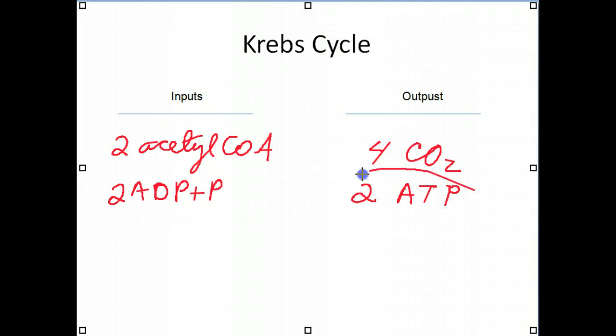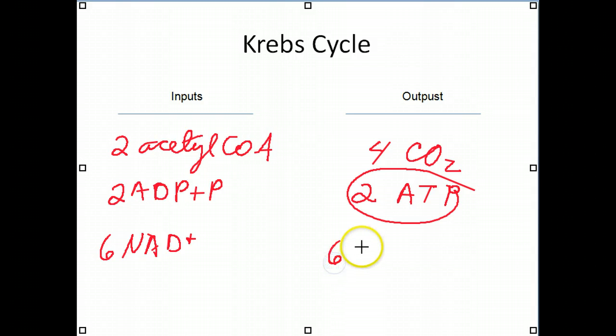These ATP are going to go off and they serve as the currency or the energy for the cells to continue their work. But more importantly is that we've created six molecules, or we started out with six molecules of NAD+, and we've reduced them. So NAD+ is the oxidized form. We've reduced them to NADH. These are going to go off and they have tons of energy still. So these guys are very important.